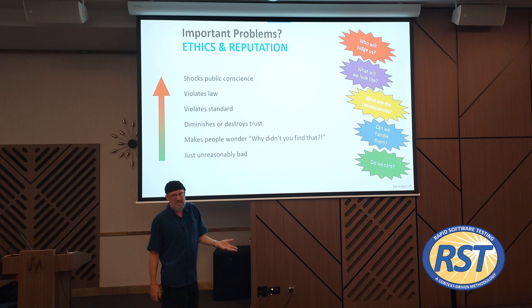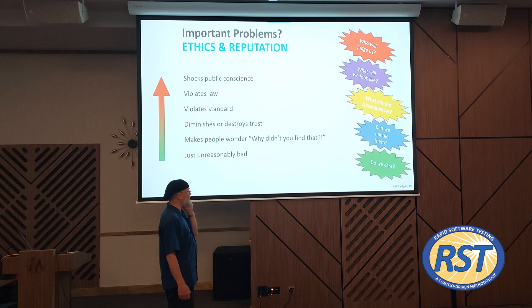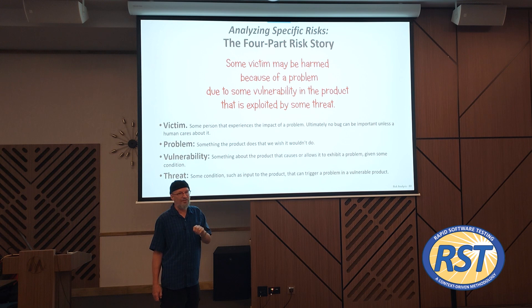Maybe it's something regulated, or something that diminishes or destroys trust. Maybe it makes people wonder why you didn't find that problem. Or maybe it's just unreasonably bad. Let's think of this as a four-part story: some victim might suffer loss, harm, or damage because of a vulnerability in the product that would be triggered by some threat.